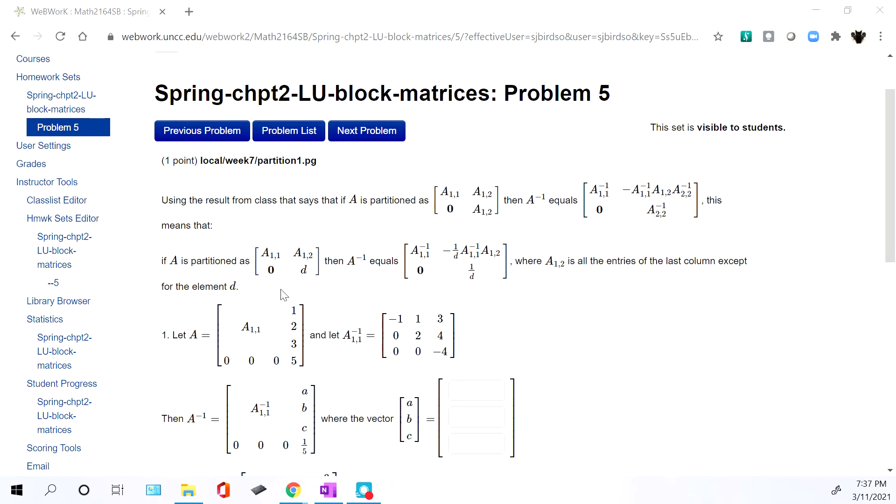Now in terms of what we're given here, you're told that A equals bottom row, three zeros and five, last column, one, two, three, and then the five at the bottom. And everything else is just tagged with the block A11.